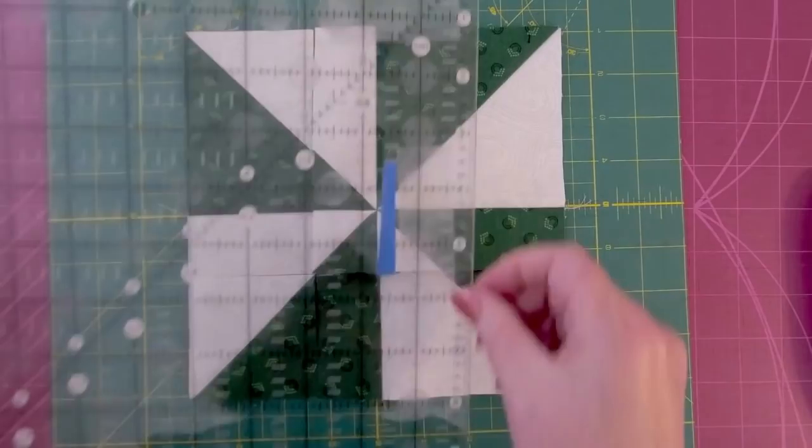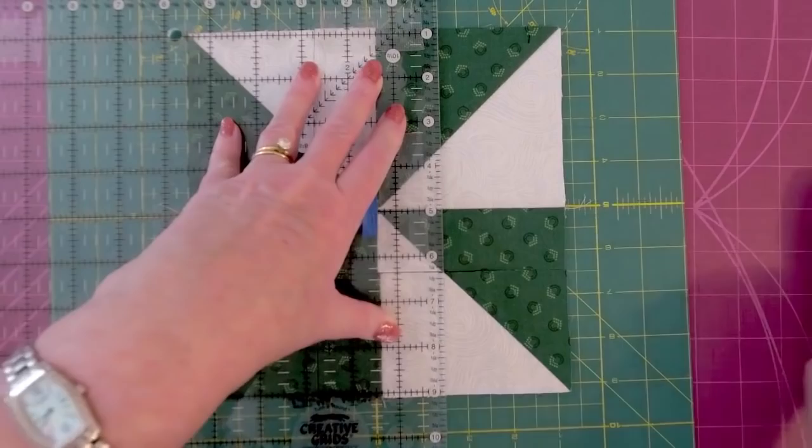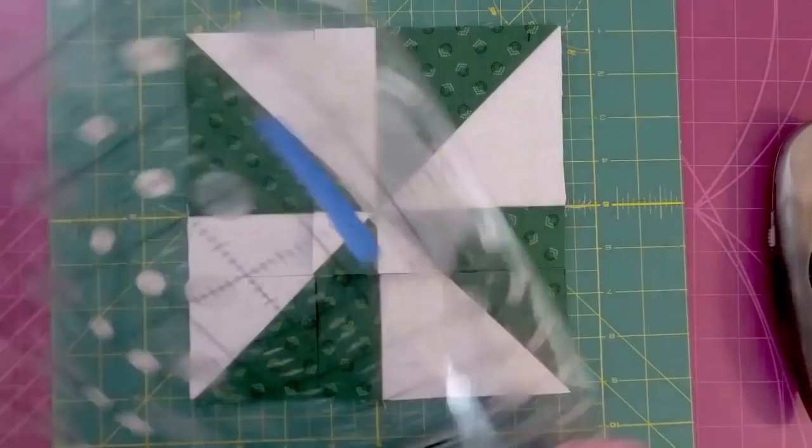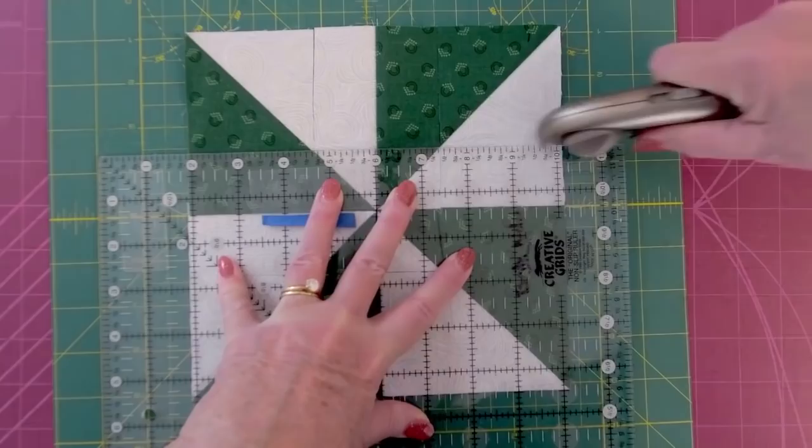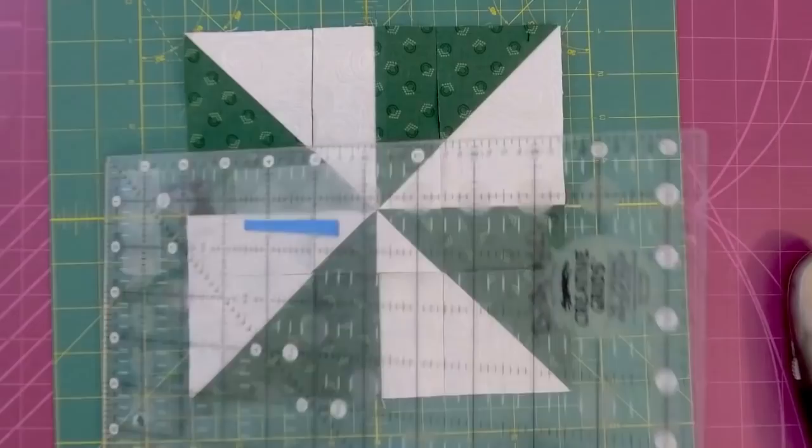We turn the mat 180 degrees. We're going to make the second set of cuts, cuts three and four. And the nine sub blocks are each going to measure two and three quarters inches by two and three quarters inches square. And it is important that these blocks are square.